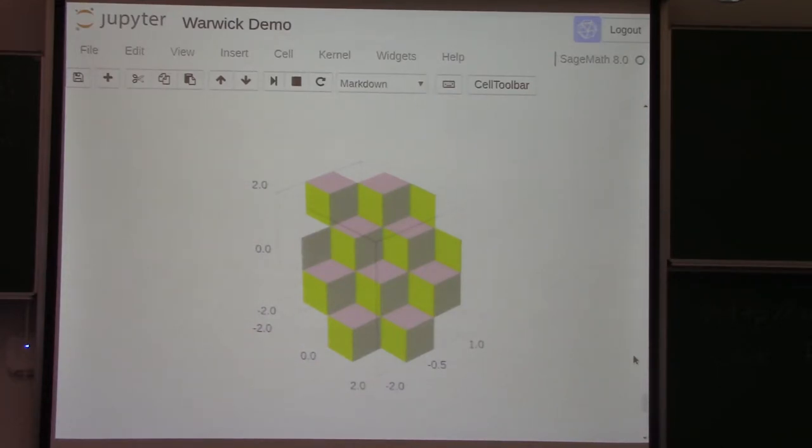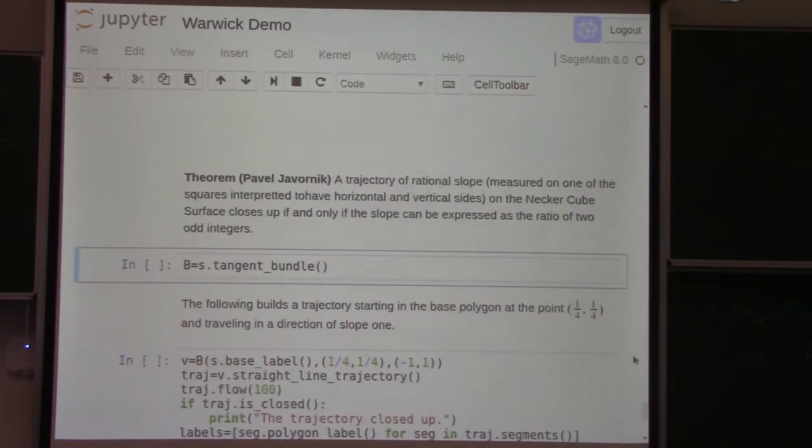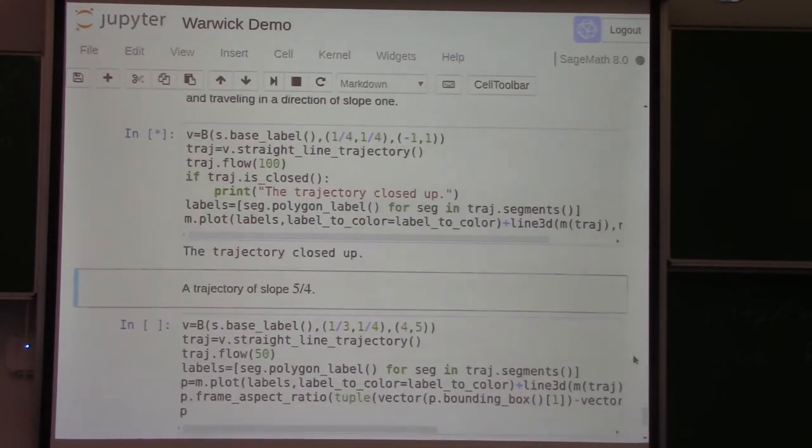But so he's been studying geodesic flow on this thing. And in particular, he's undergraduate, so he's thinking mostly about rational trajectories. So a rational trajectory is just one that if you measure it in the natural coordinate, the slope is rational. And yeah, so his theorem is that if that rational number is odd over odd, then it closes up. And if it's not odd over odd, then it doesn't close up. So I thought I'd just, and I can draw you some pictures of trajectories.